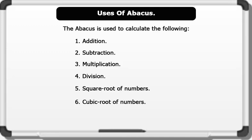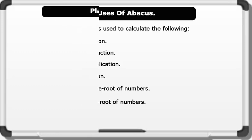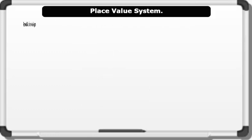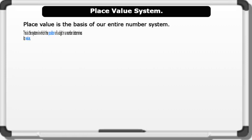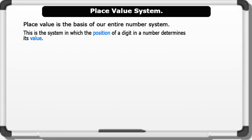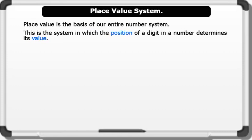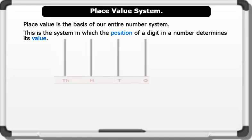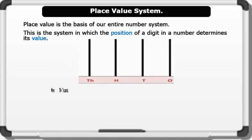Now let's see what Place Value is. Place Value is the basis of our entire number system. This is the system in which the position of a digit in a number determines its value. Let's look at the place value system below.